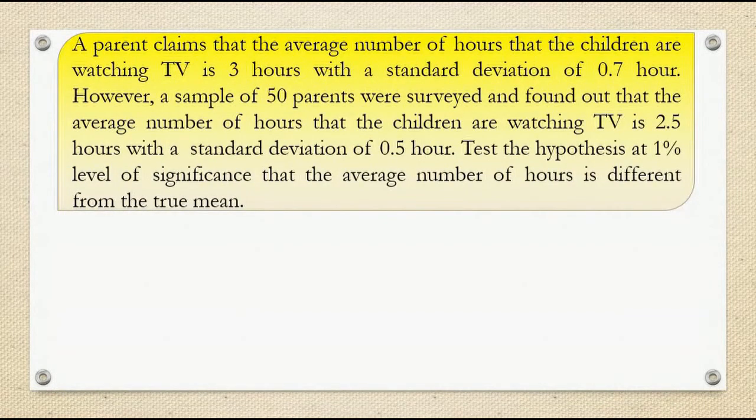A parent claims that the average number of hours that the children are watching TV is 3 hours with a standard deviation of 0.7 hour. However, a sample of 50 parents were surveyed and found out that the average number of hours that the children are watching TV is 2.5 hours with a standard deviation of 0.5 hour. Test the hypothesis at 1% level of significance that the average number of hours is different from the true mean.